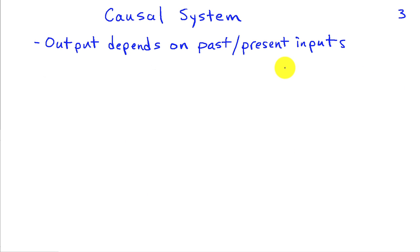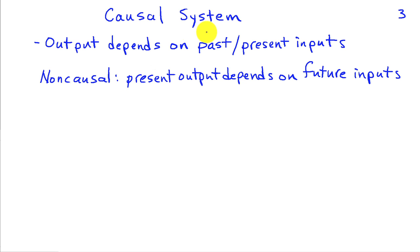The third property I want to mention of systems, we say a system is causal. What that means is that the output of the system is only a function of past and present inputs. It doesn't depend on future inputs. If the output of the system depends on future values of the input, we say that such a system is non-causal, and that requires knowledge of the future for such a system to be implemented. So any physical system is going to be a causal system.